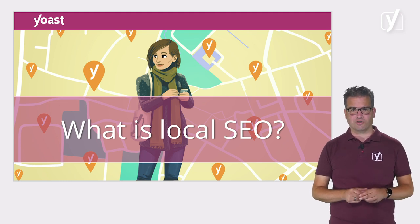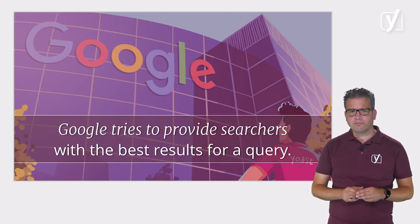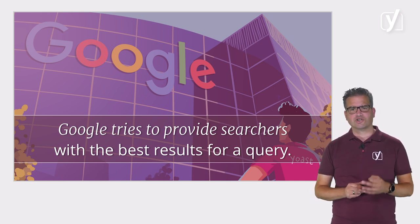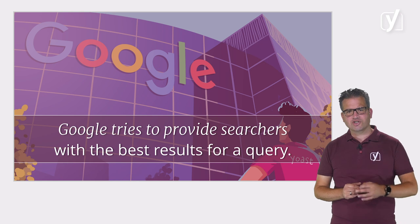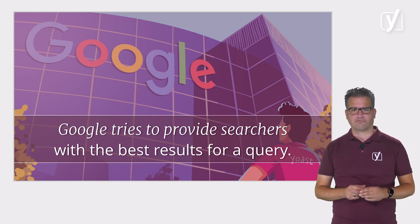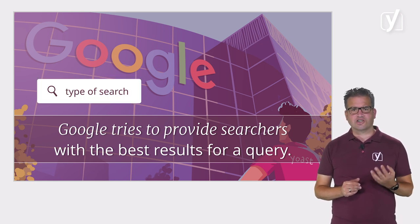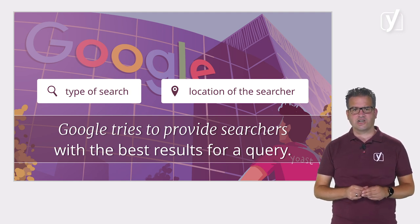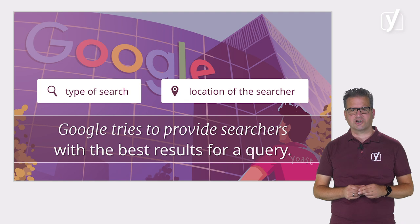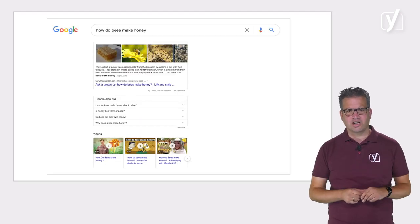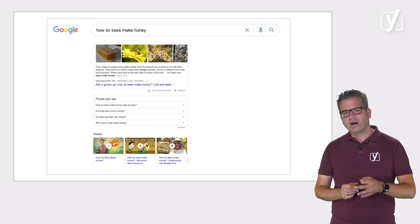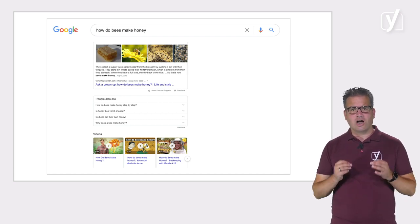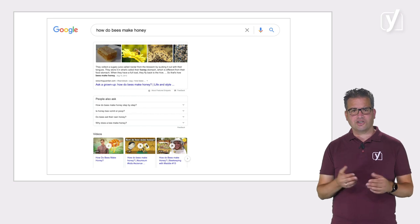Let's dive into this a bit deeper. As we've seen in the previous lessons, Google always tries to provide searchers with the best results for a query. But the best result depends on the context of the query. The type of search and the location of the person searching give Google vital pieces of context. For example, say I'm searching for 'how do bees make honey.' No matter where I am performing that search — mobile, desktop, home or on the go — I'm looking for an answer to that question.